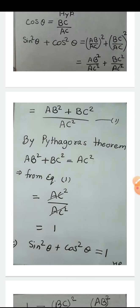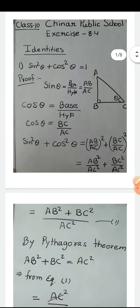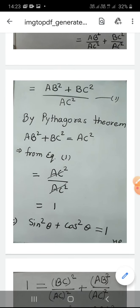So since we took the left side — sin²θ + cos²θ — and substituted the values of sin θ and cos θ, we arrived at 1. It means the LHS equals the RHS. Therefore, sin²θ + cos²θ = 1 is proved.